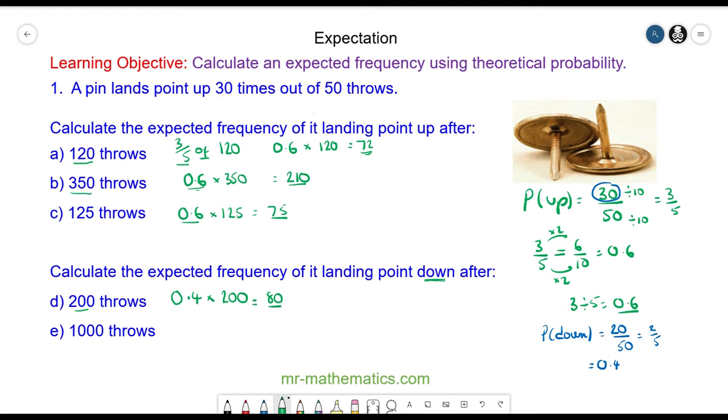And for question e, that would be our experimental probability multiplied by the sample, and that would be 400. Let's try the next question.